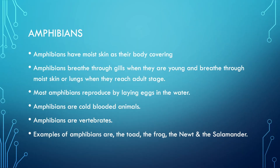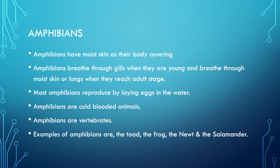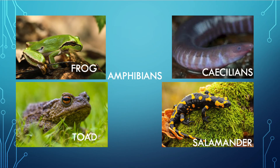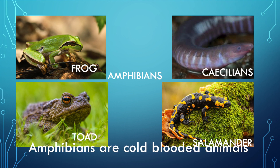So you guys won't get confused between a reptile and a crustacean. Amphibians have moist skin as their body covering. Amphibians breathe through gills when they are young; they don't breathe through gills when they are adults. They breathe through moist skin or lungs when they reach the adult stage. Most amphibians reproduce by laying eggs in the water. Amphibians are cold-blooded animals.